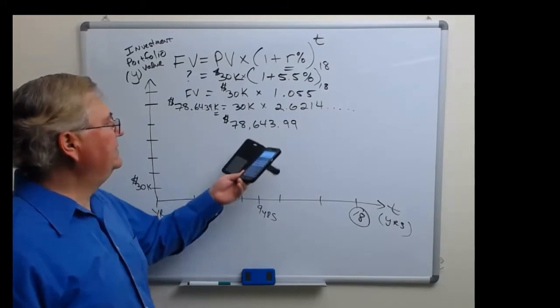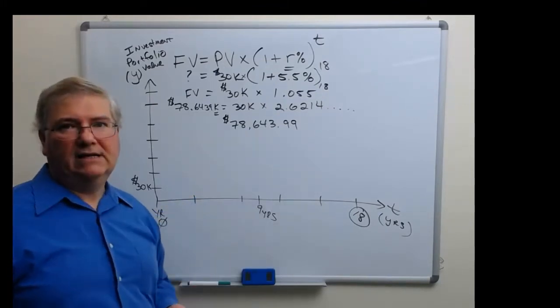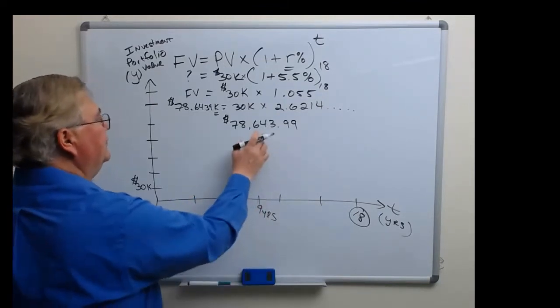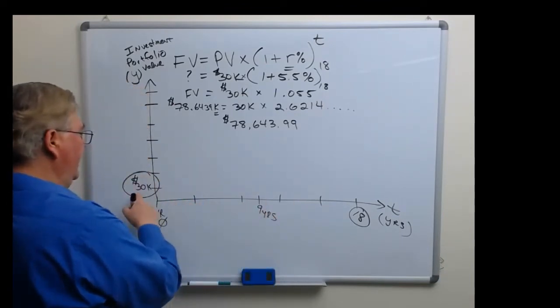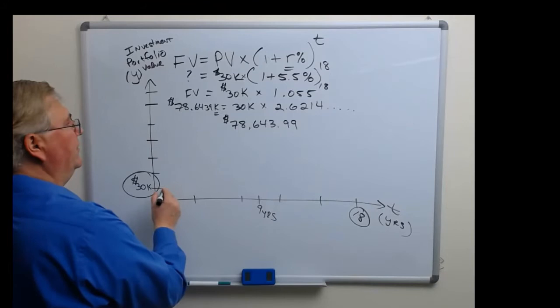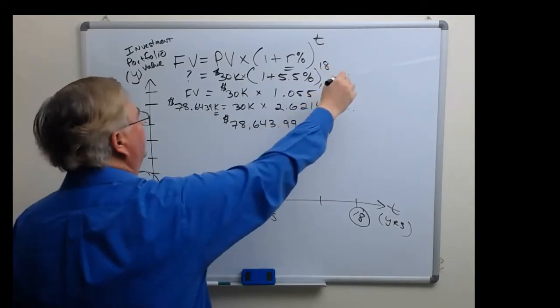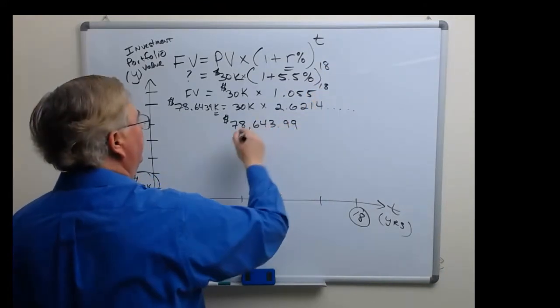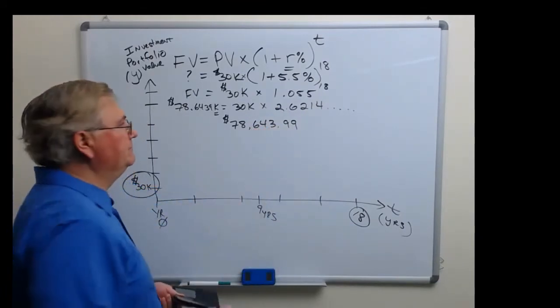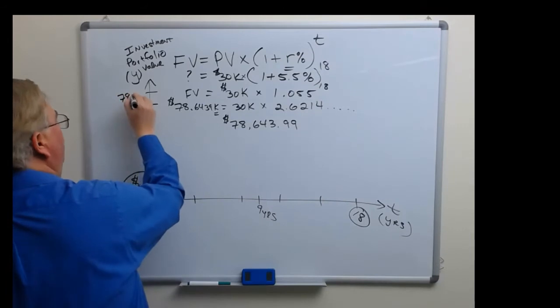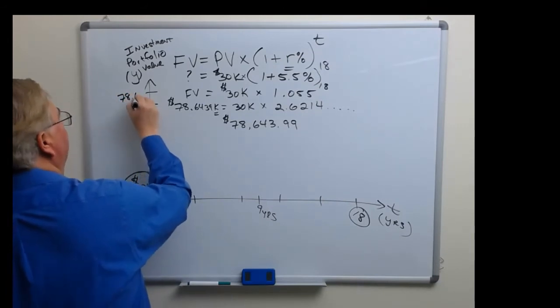So seventy-eight thousand six hundred forty-three dollars and ninety-nine cents, that's the future value. Remember we started out at thirty thousand in year zero. Well, this portfolio will go up to seventy-eight thousand six hundred forty-four dollars, that's 78.64k.